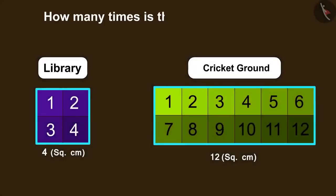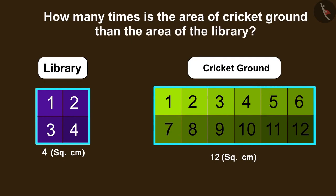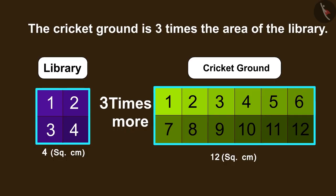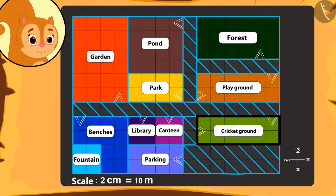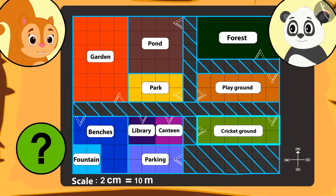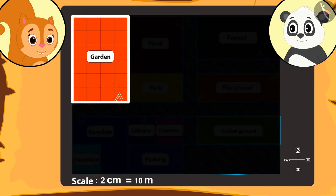So now can you tell how many times the area of the cricket ground is more than the area of the library? You can pause the video to find the answer. Absolutely correct, children! The area of the cricket ground is 3 times the area of the library. Chanda is surprised to know how big the cricket ground is. Golu tells her there is another place bigger than the cricket stadium, and asks Chanda to name the place with the biggest area. That's correct — the area of the garden is the biggest.